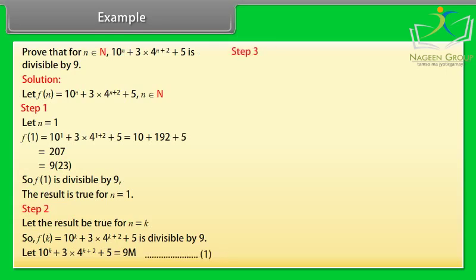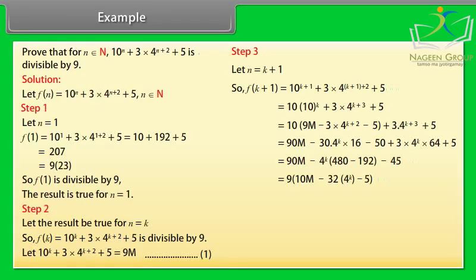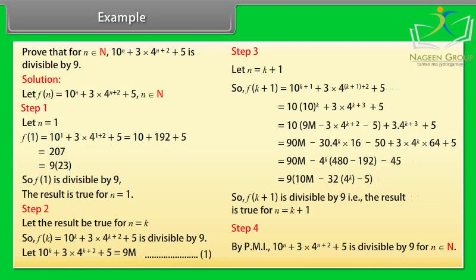Name it equation (1). Step 3: Let n = k+1. So f(k+1) = 10ᵏ⁺¹ + 3·4ᵏ⁺³ + 5. By calculating it, we get f(k+1) = 9(10m − 32·4ᵏ − 5). So f(k+1) is divisible by 9, that is, the result is true for n = k+1. Step 4: By the principle of mathematical induction, 10ⁿ + 3·4ⁿ⁺² + 5 is divisible by 9 for all n belonging to N.